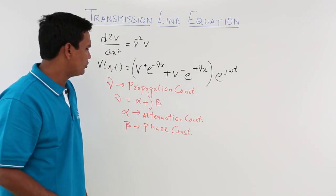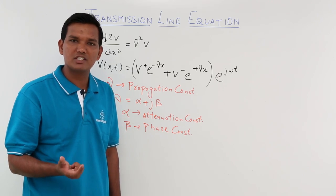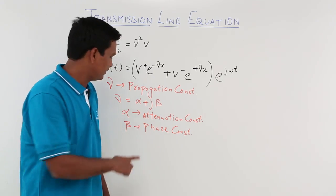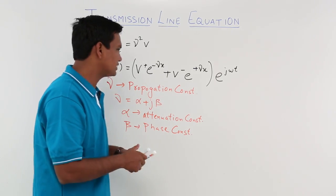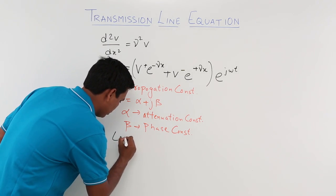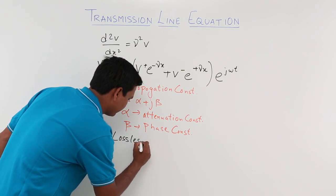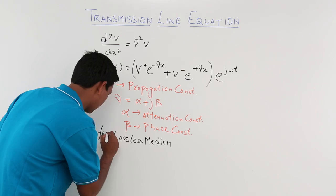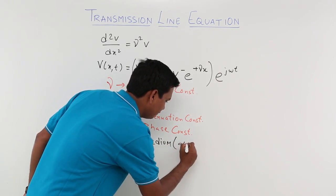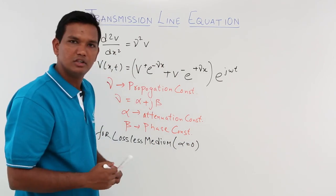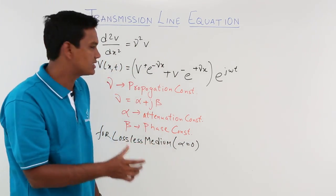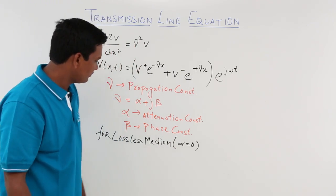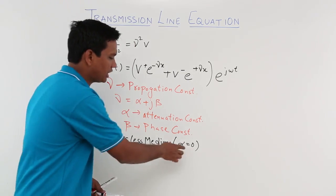What I am going to do is assume a lossless medium. We know that in a lossless medium the free charge carriers are zero. So for a lossless medium, α would be zero. We are looking at the lossless medium case to see how the equation behaves, so I will continue with α = 0.